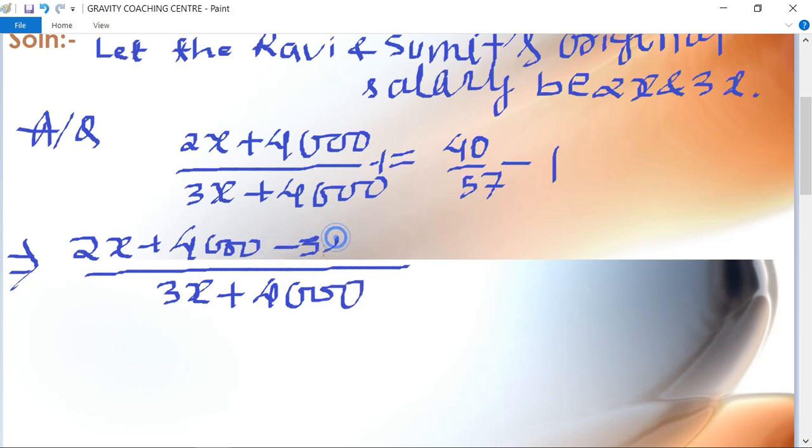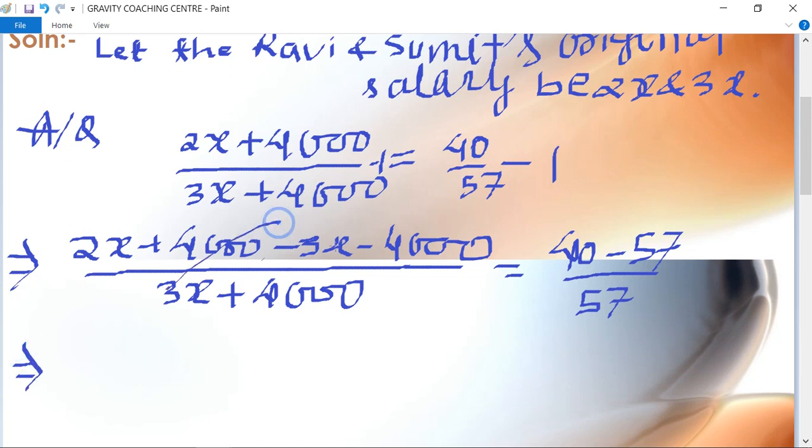Cross multiplying and simplifying gives us minus 17 upon 57, and the minus signs cancel.